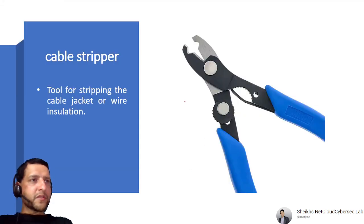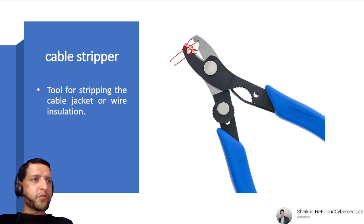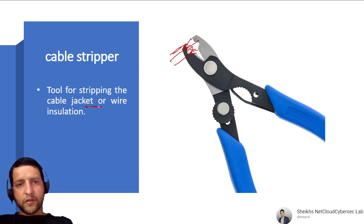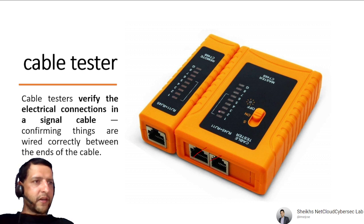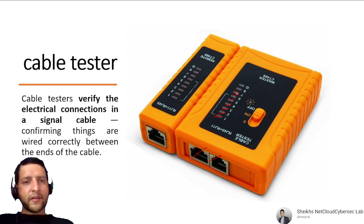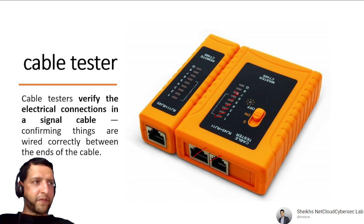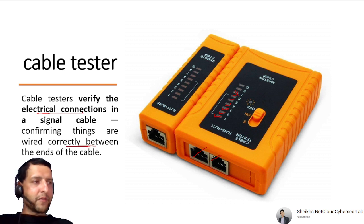A Cable Stripper is a tool for removing the cable jacket or wire insulator, exposing the inner wires before crimping. A Cable Tester is used to verify the electrical connections in a cable — you insert the cable ends and check that all indicator lights come up. If a light doesn't light up, that wire in the RJ45 connector is not connected properly. Cable testers confirm that wires are correctly connected between both ends.